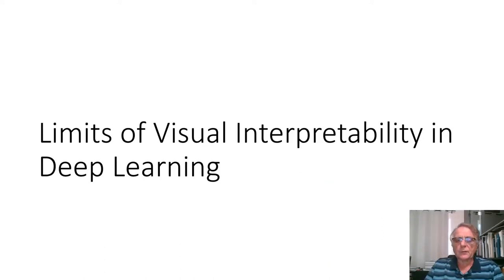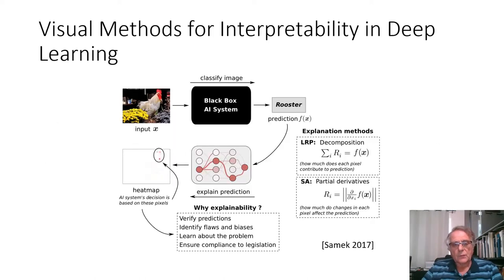We will talk about limits of visual interpretability in deep learning and, in general, limitations of the interpretability in deep learning. Visual methods for interpretability in deep learning are based today mostly on the concept of the heat map. So you have an object, say, in image, in this case, you see the animal, and then you show the heat map where you identify the most important pixels called salient points or parts. And then this is provided as an explanation.